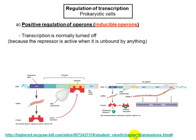Now we move to the inducible operon — the lac operon. This system is only active when a certain molecule is present in the environment, the opposite idea from the tryptophan operon. These genes are not constitutively active: since they make enzymes that degrade lactose, if there is no lactose in the environment, the cell would waste energy making those enzymes unnecessarily.